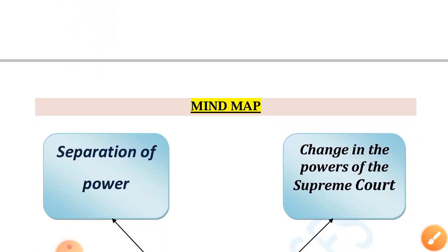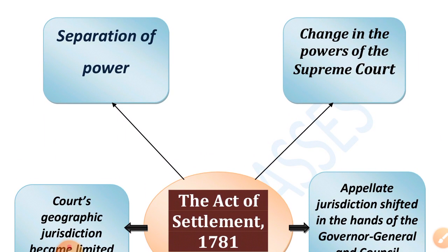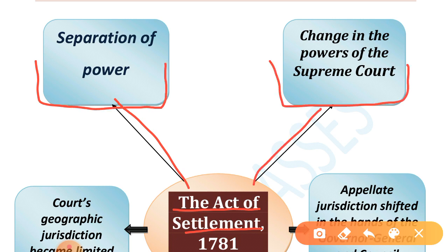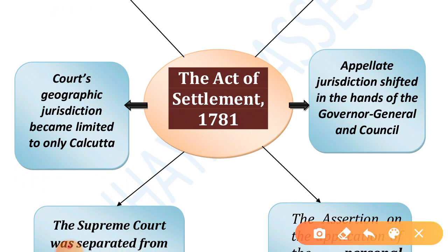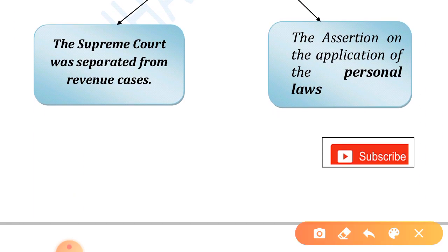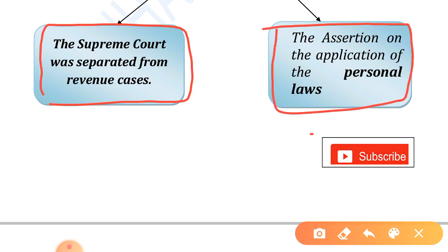Mind map of the Act of Settlement 1781: separation of power; change in the powers of the Supreme Court; the Court's geographic jurisdiction became limited to only Calcutta; appellate jurisdiction shifted to the Governor General and Council; the Supreme Court was separated from revenue cases; and the assertion on the application of personal laws.